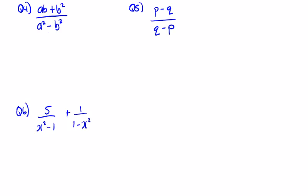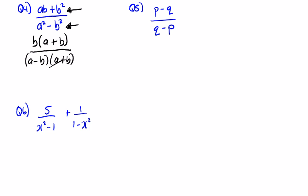For question 4, identify that both terms in the numerator have a common factor of b. Take b out to get b(a plus b), which is ab plus b squared. The denominator is a difference of two squares: (a minus b)(a plus b). These cancel, leaving b over a minus b.